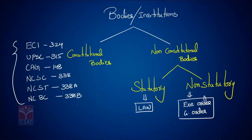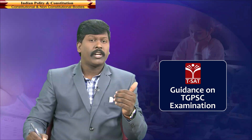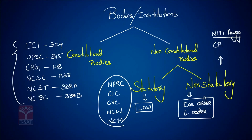Examples of statutory bodies include the National Human Rights Commission, Central Information Commission, Central Vigilance Commission, National Commission for Women, and National Commission for Minorities. Coming to non-statutory bodies, examples are NITI Aayog — which stands for National Institute for Transforming India — and CBI. These are important bodies established by executive order.